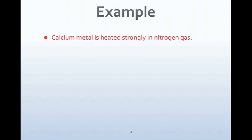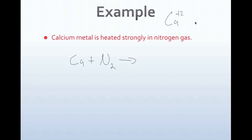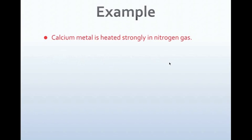Next: calcium metal is heated strongly in nitrogen gas. Calcium is Ca, nitrogen is N2 (it's a diatomic). We have two elements, so this is a synthesis reaction. Calcium is in group 2 with a plus 2 oxidation number, and nitrogen is in group 15 with a negative 3 oxidation number. We crisscross to get Ca3N2. To balance, we put a coefficient of 3 in front of Ca: now we have 3 calciums on each side and 2 nitrogens on each side.